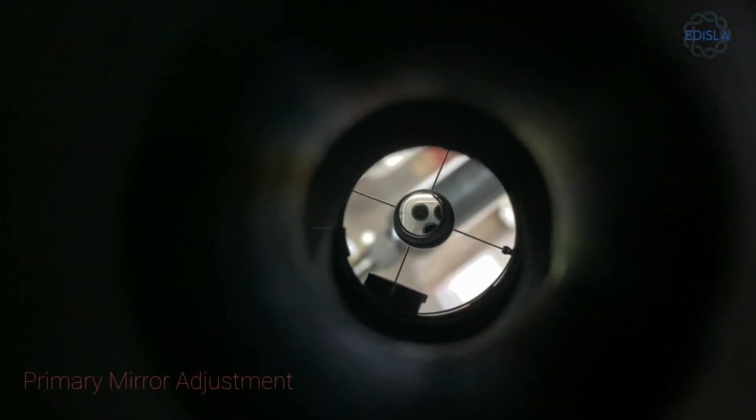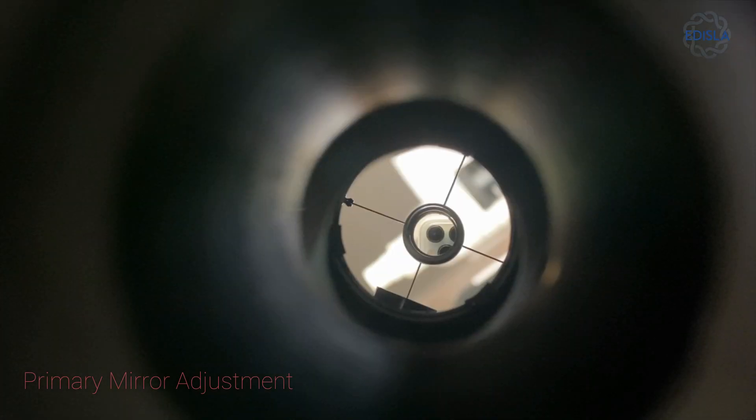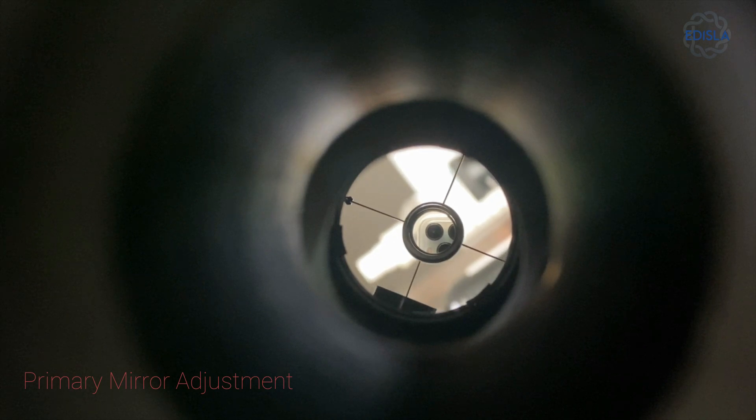Let's move on to the primary mirror. When the primary mirror is out of collimation, the outer and inner circles remain visible, but the quadrants will lack symmetry.